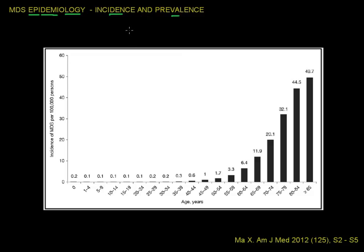The largest studies in MDS epidemiology are from Western countries, and most of the data actually comes from the United States of America. We'll focus on data from one of the largest surveillance programs called the SEER database — Surveillance, Epidemiology, and End Results. This SEER database is regularly updated and gives us a good idea of the incidence of different types of diseases and cancers in the USA.